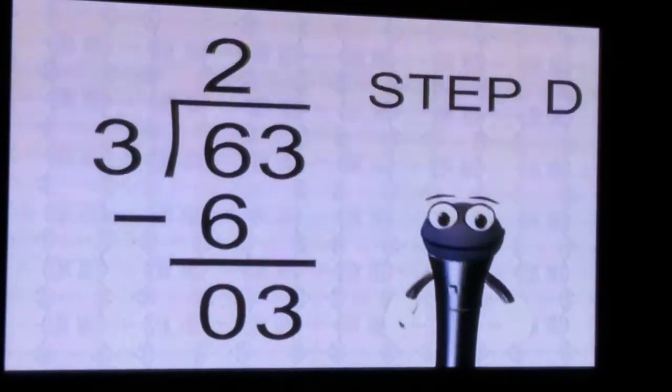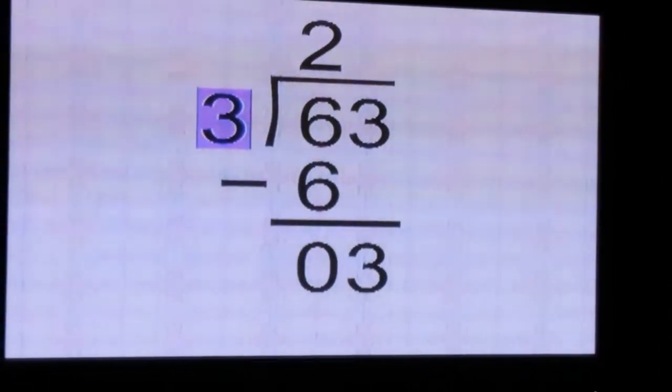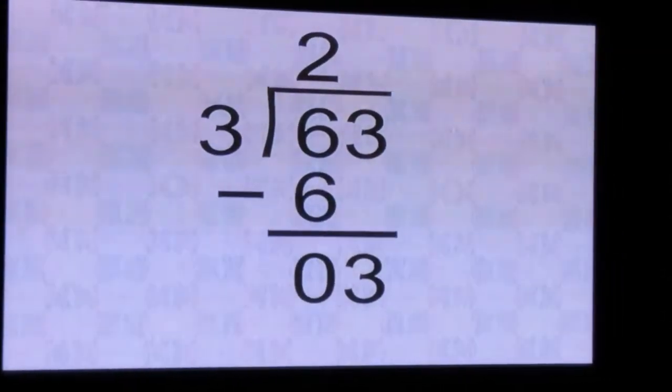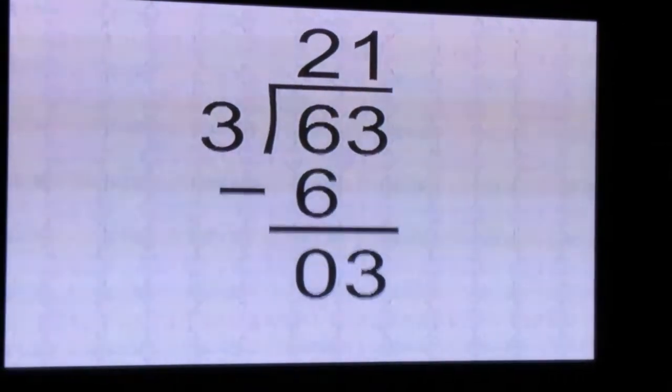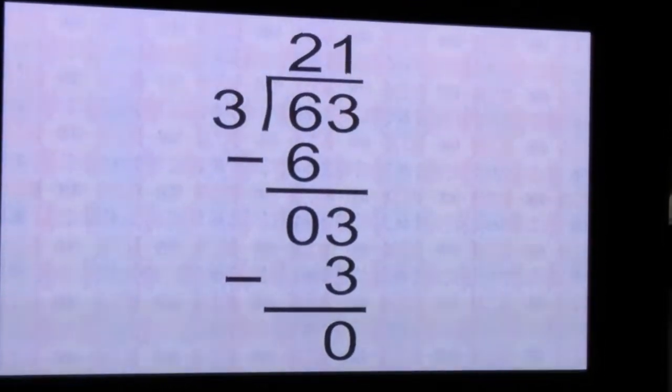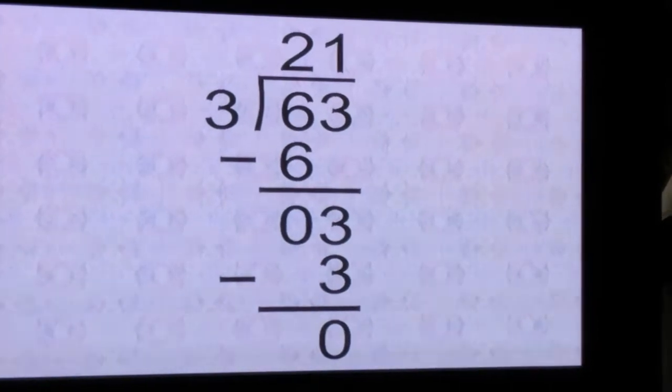Step D: 3 divided by 3 is 1. Put a 1 in the quotient above the 3. 3 times 1 is 3. Write a 3 under the 3 and subtract. This leaves us with no remainder. The answer, or quotient, is 21.